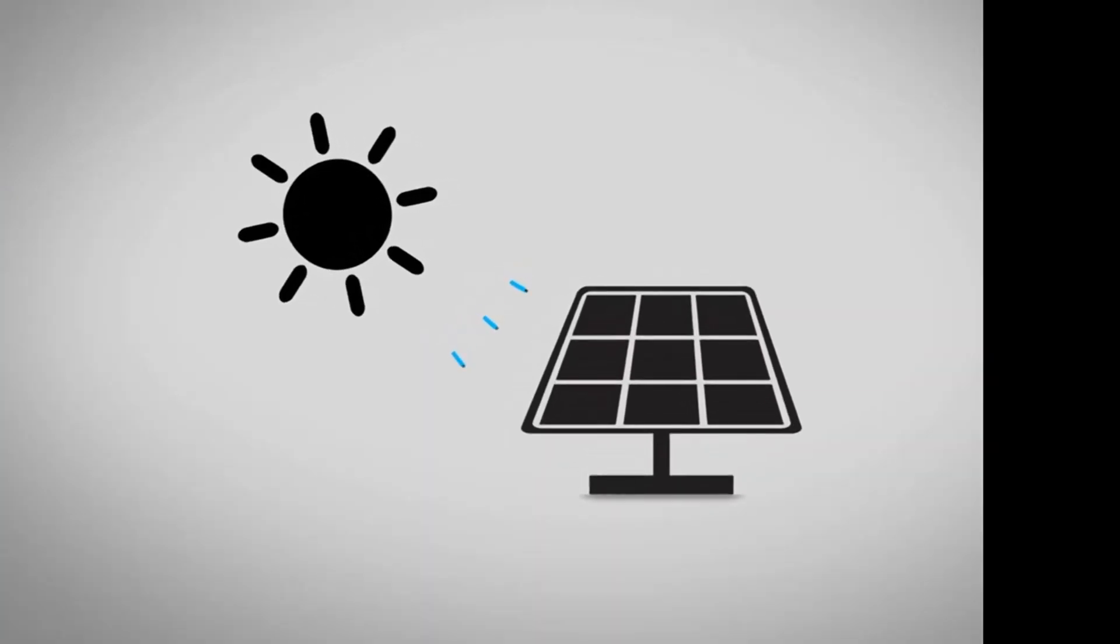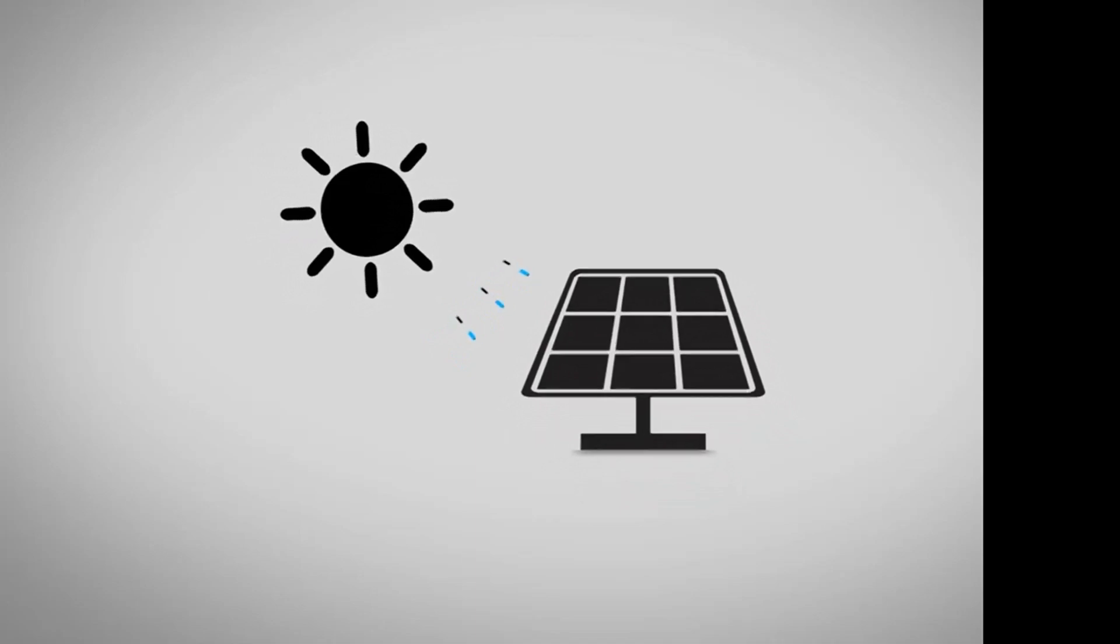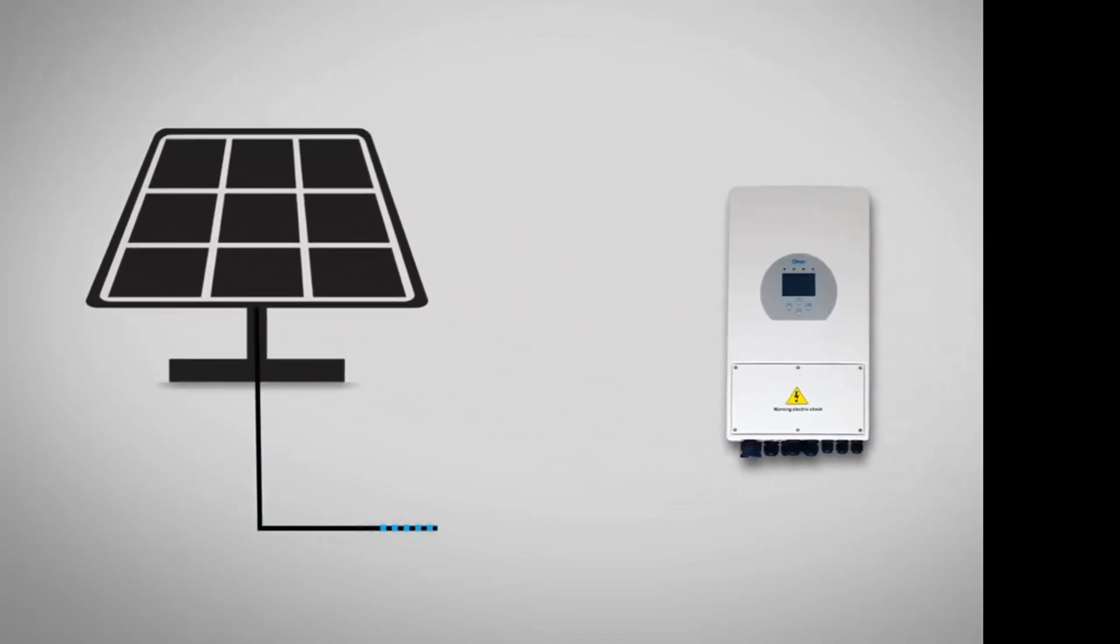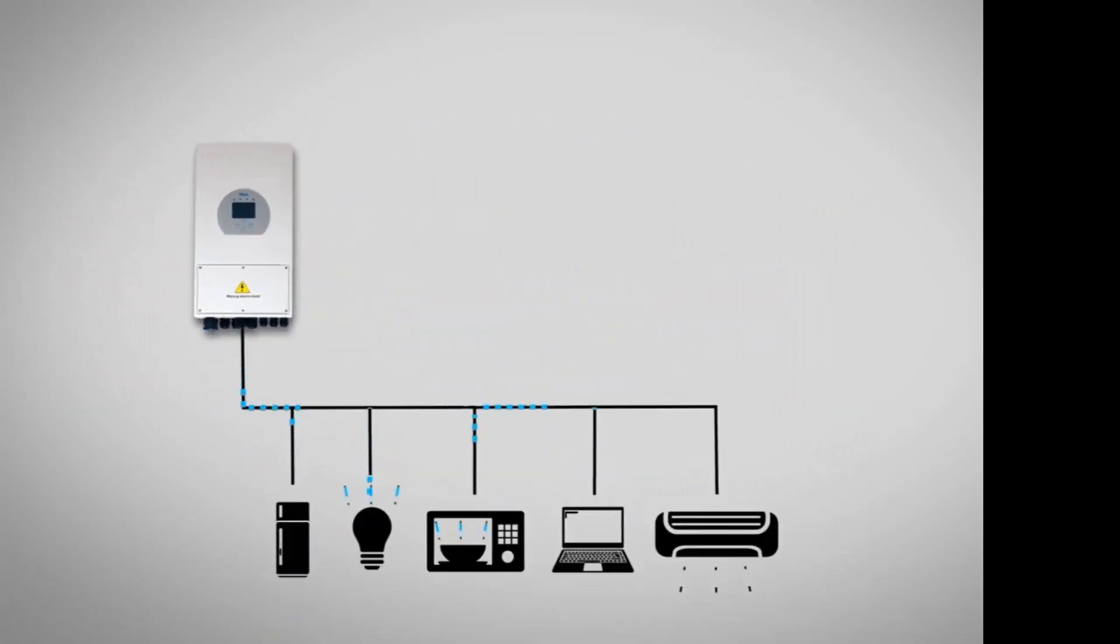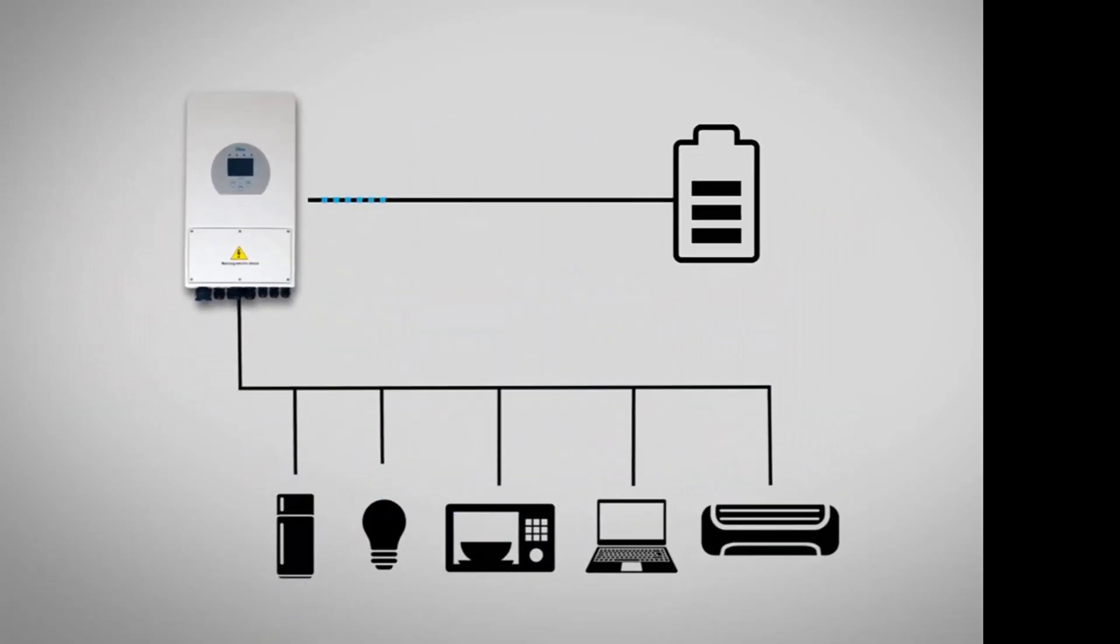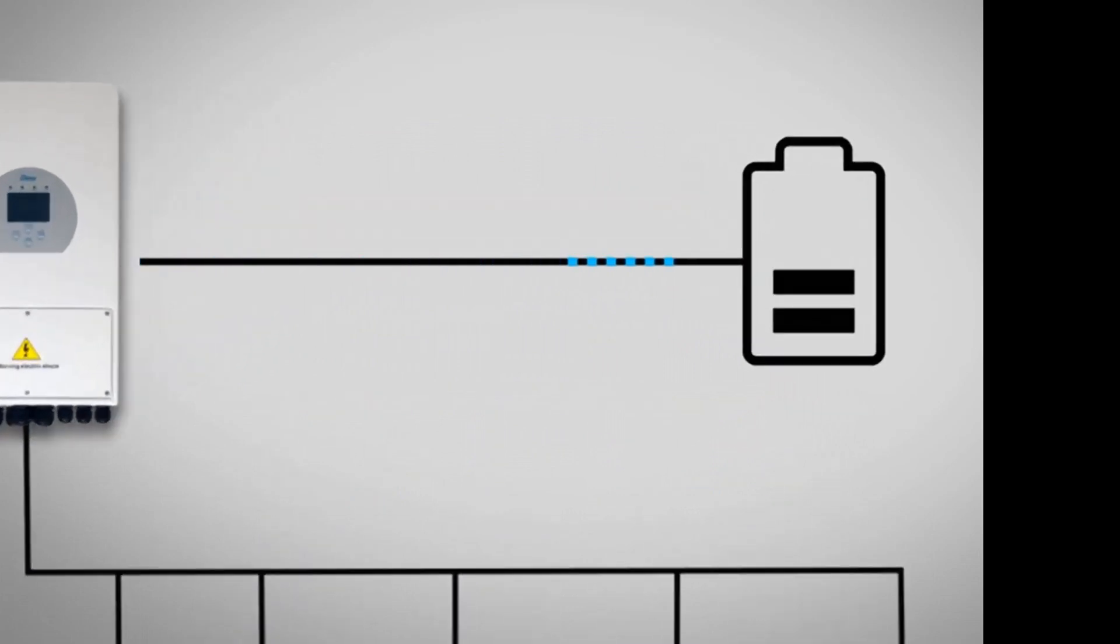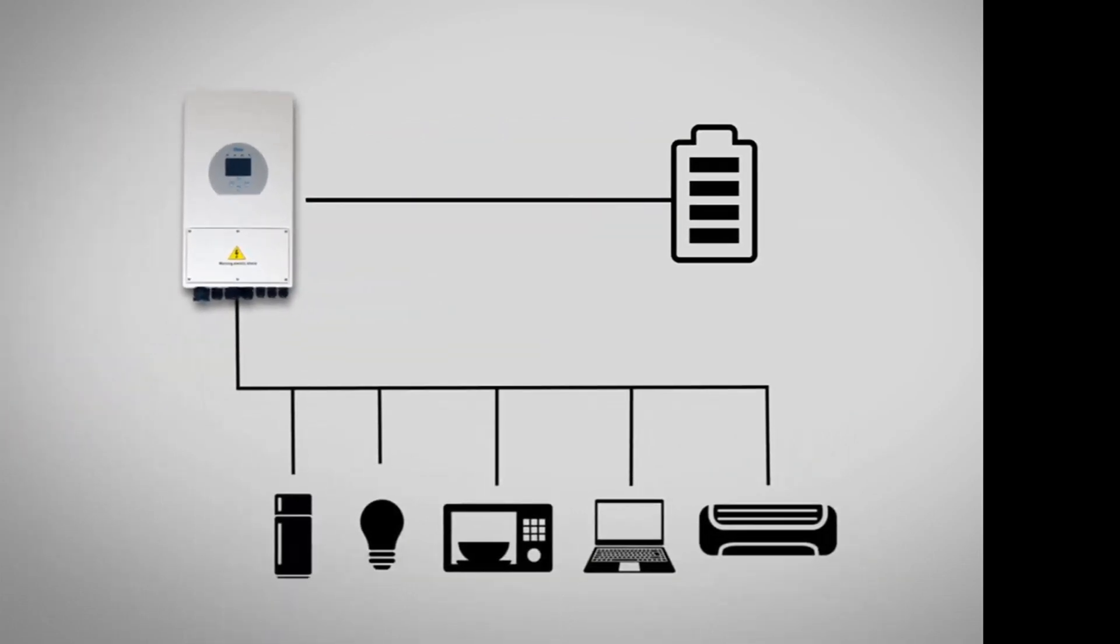It works like this. The energy captured from the sun through solar panels flows from Daie Hybrid Inverter to local consumption. Through precise computer arrangements, the surplus is stored in batteries until they are fully charged.